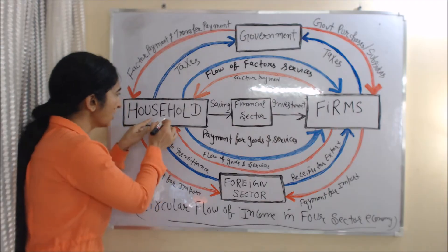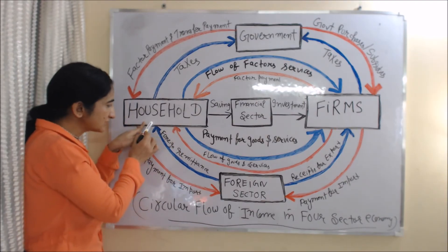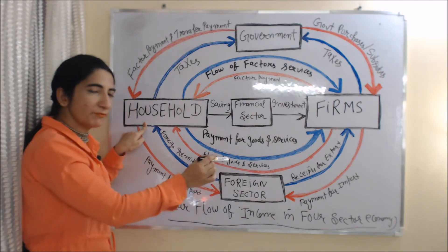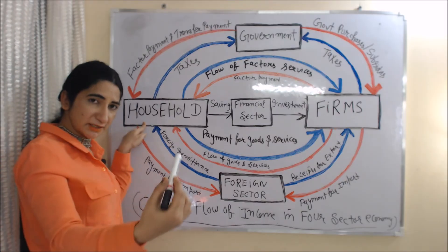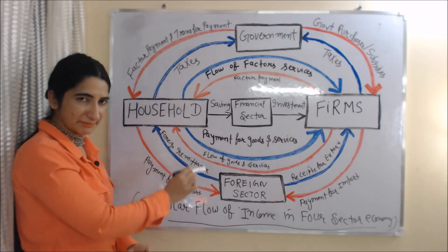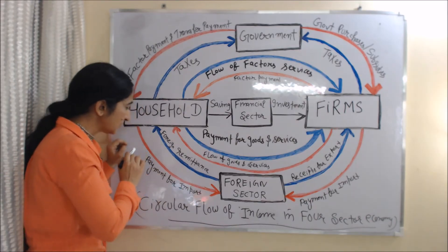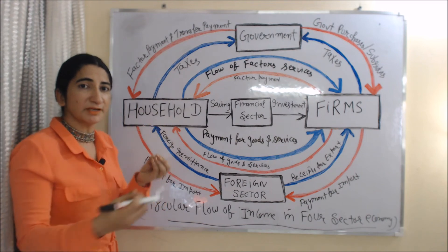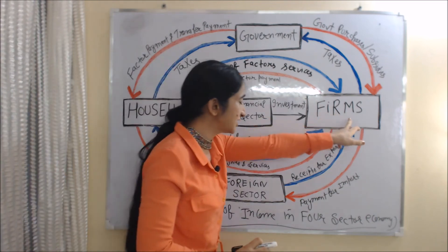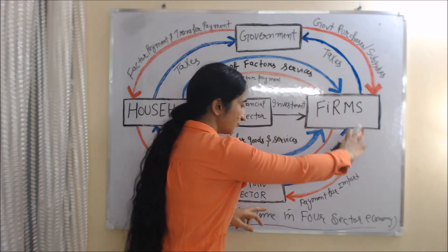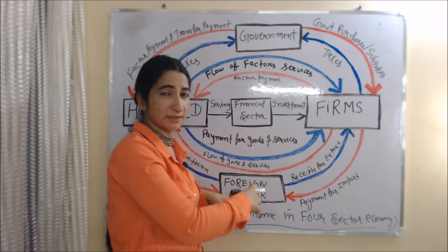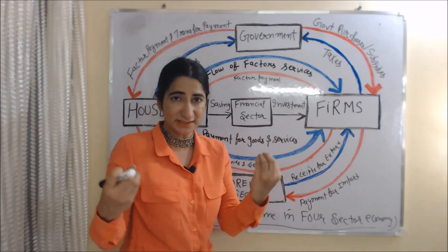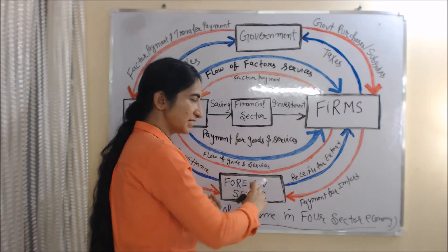We see the relation between the household sector and the foreign sector. The household sector receives foreign remittances from the foreign sector — meaning if a relative abroad sends you money, that is called foreign remittance. And the household sector makes payment for imports to the foreign sector when they import goods. Firms also make payment for imports to the foreign sector, sometimes importing goods, services, tools, and equipment for business purposes.